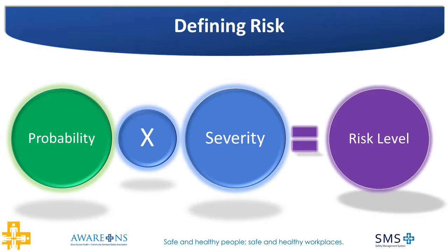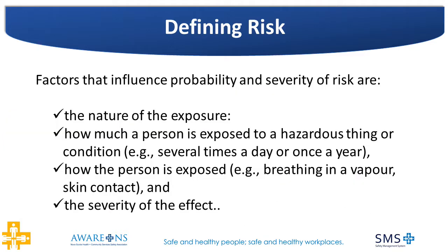A risk assessment assesses hazards in order to calculate the risk level a hazard poses in the workplace. It does this by looking at the relationship between the probability or likelihood of an incident happening with the severity — the amount of harm that is created when exposed to a hazard. Factors that influence probability and severity of risk are the nature of the exposure, how much a person is exposed to a hazardous thing or condition — for example, several times a day or once a year — how the person is exposed, like breathing in vapor or skin contact, and also the severity of the effect.